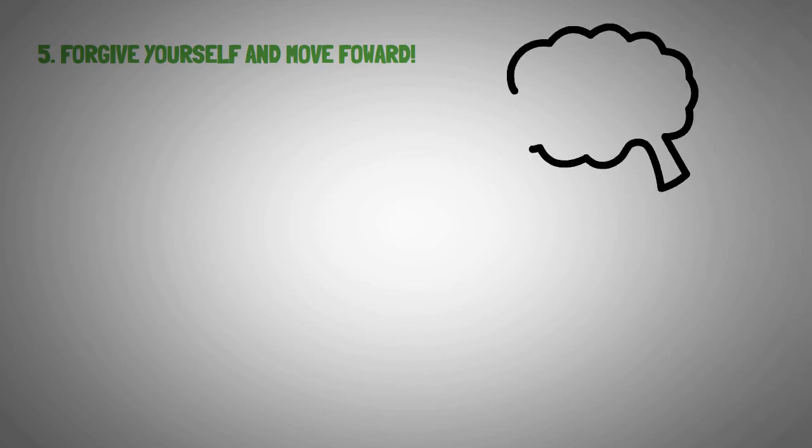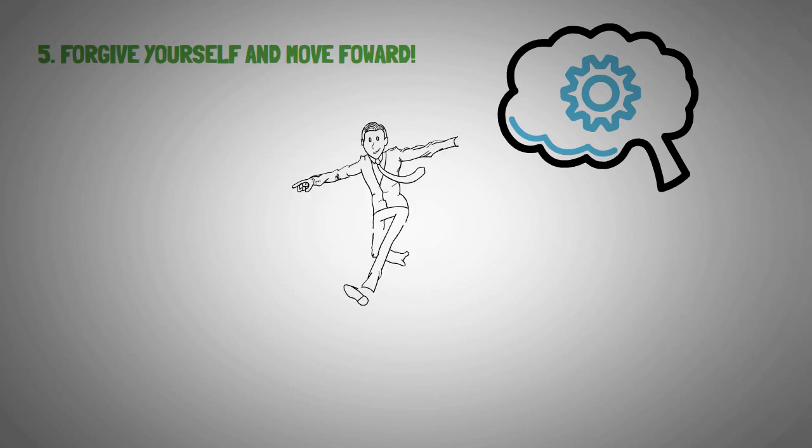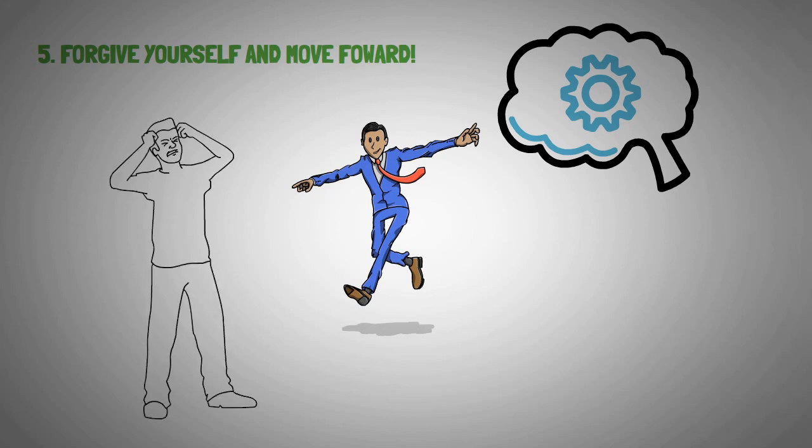Number five and the last step is to forgive yourself and move forward. Developing a new way of thinking won't always go according to plan. You will have ups and downs, fabulous successes and flat-out failures. The key is to keep moving forward. When you have a setback, figure out what caused it and move on.